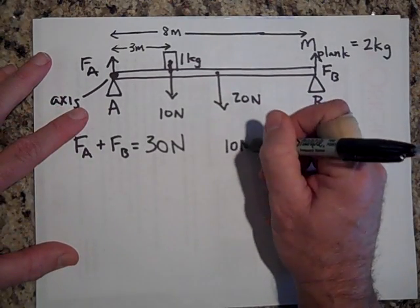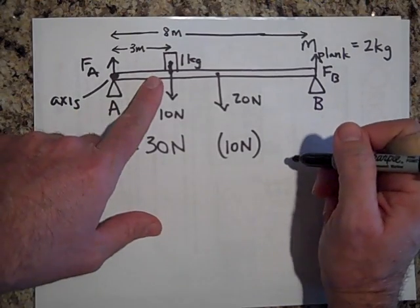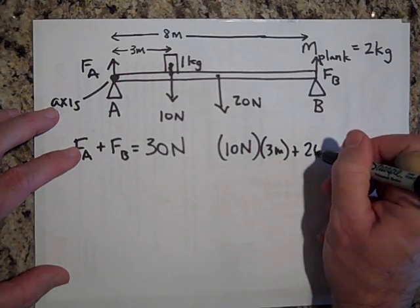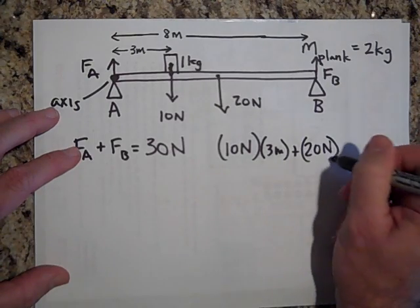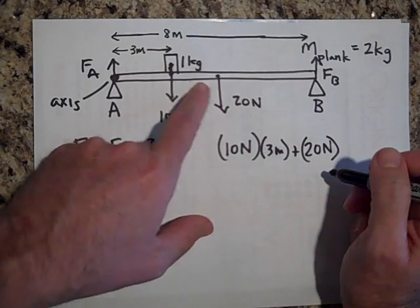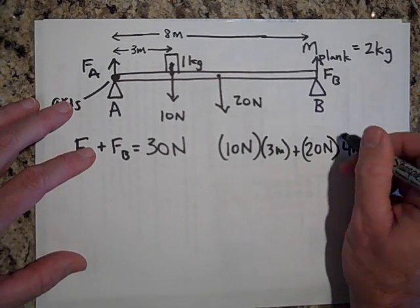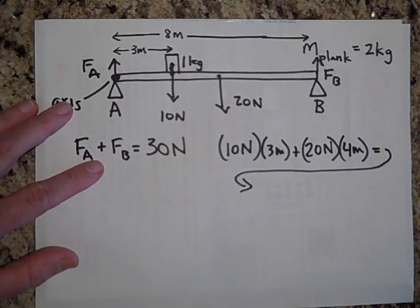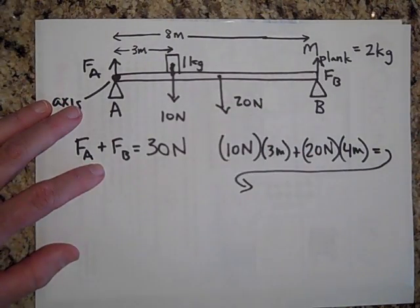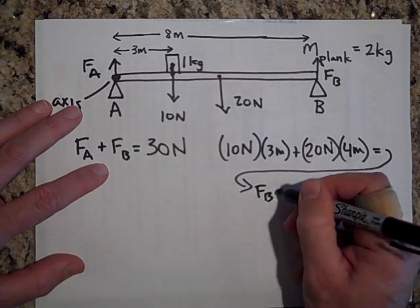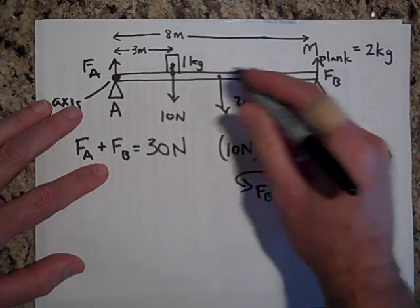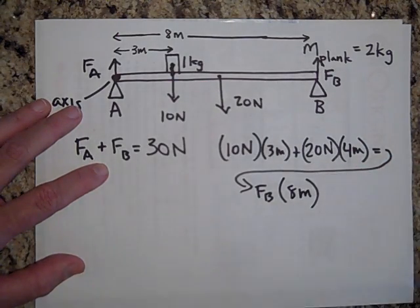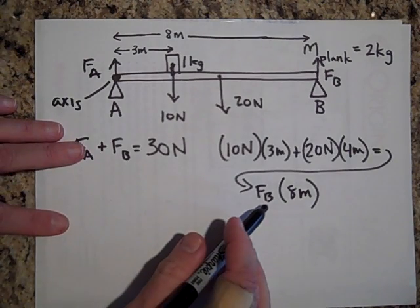So let's show the battle of the torques, 10 newtons times, that's going to be four meters. It's in the middle of the board that has to equal the force from B times. How far is that from the axis? All eight meters. So at this point I can solve for F_B.